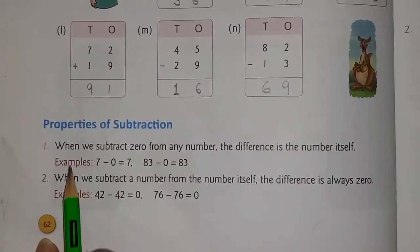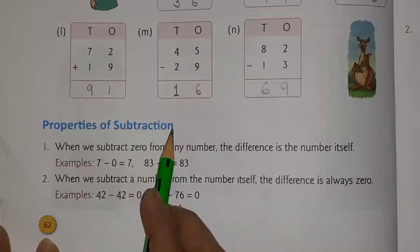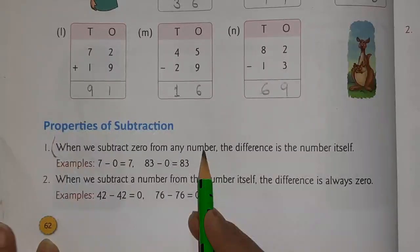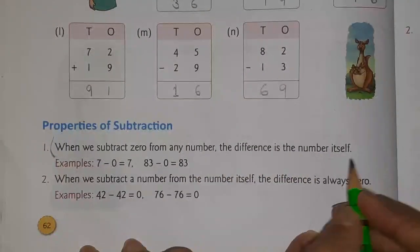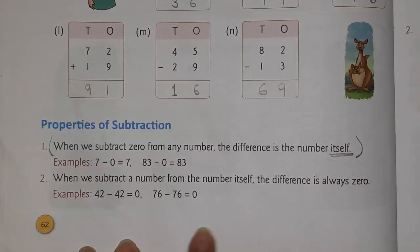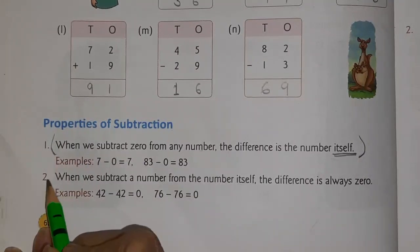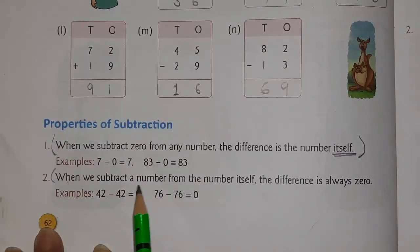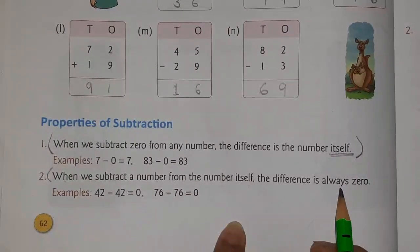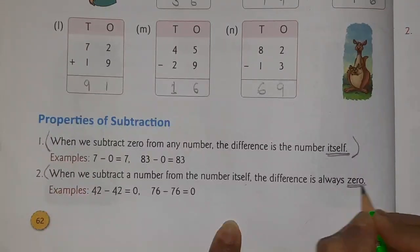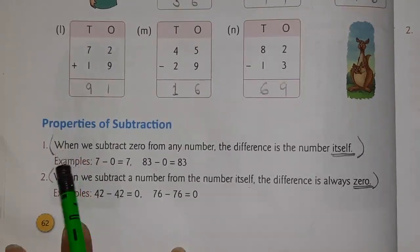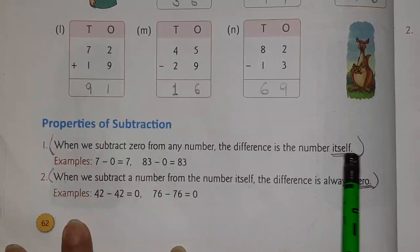So, here are the sentences. Properties of subtraction. When we subtract 0 from any number, the difference is the number itself. This will come from fill in the blanks. Next property we will see. When we subtract a number from the number itself, the difference is always 0. So, this will also come as a fill in the blank. So, you also do this bracket and underline these words.